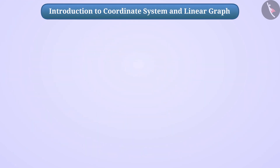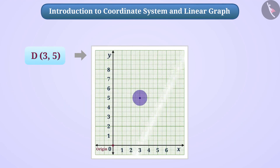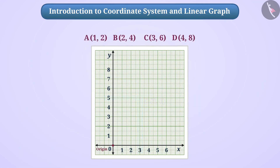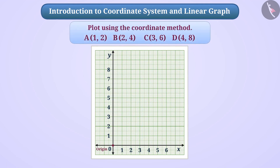If we are given the coordinate of a point, then with the help of these, we can determine the position of the point in the plane. This process is called plotting of points. Here are some points and their coordinates. Can you plot them using the coordinate method? Try it by pausing the video.